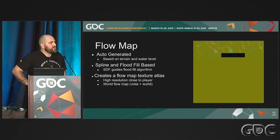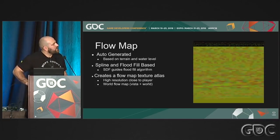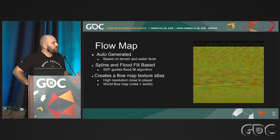Out of this process we get a flow map texture atlas with two variations: a high-resolution texture and a world flow map. The high-resolution version is streamed in close to the player, and the world flow map is baked once. The world flow map uses a UV remap table stored in the texture itself, keyed by sector ID, which tells us which portion of the atlas to read. It's self-contained, so any feature needing the flow map can read it simply based on world position.